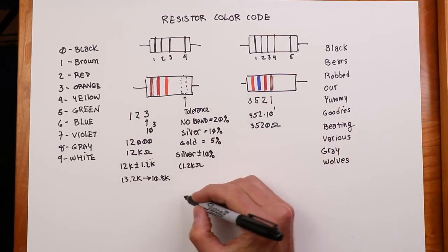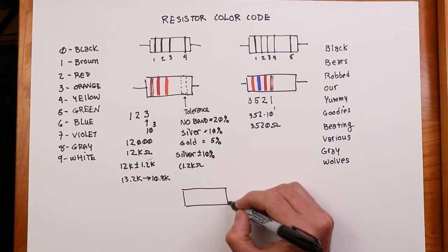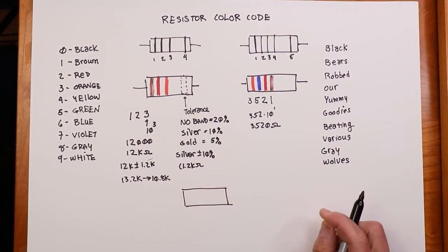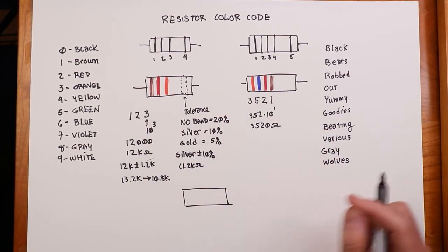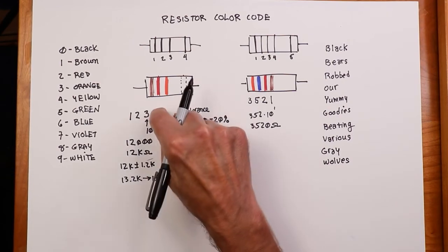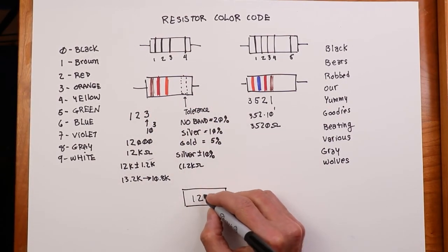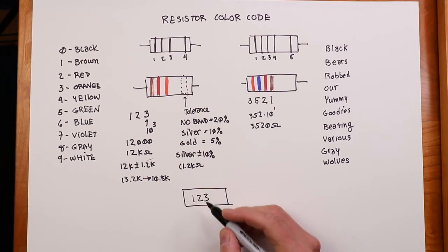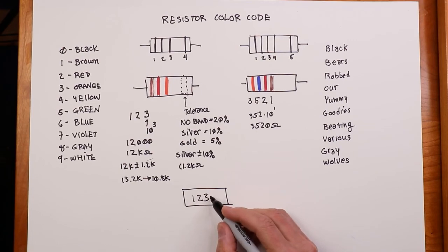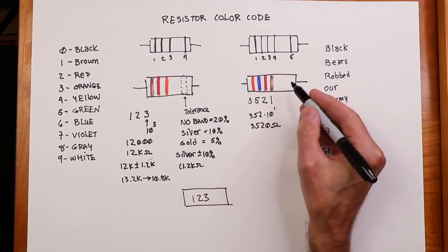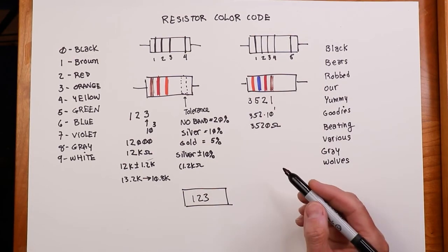Now, one other thing. If you have a surface mount resistor, one of those little square, tiny little things, you know, like that big, they're not going to use colors. What they will do is just print the number sequence on there. So for this one, it would just say 1, 2, 3 on it. In other words, it's a 1, a 2, and then 10 to the 3rd, so it's 12K. And it would be the same kind of thing over here. They're just too tiny. You're never going to see the colors.